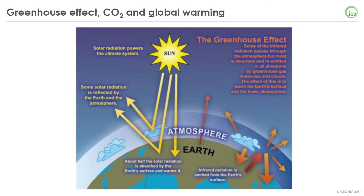A very short summary of the greenhouse effect. The temperature of the Earth results from a balance between energy coming from the Sun and the energy leaving the Earth into space. About half of the solar radiation heating the Earth is absorbed at the surface; the other half is absorbed by the atmosphere or reflected back into space. Part of the energy absorbed at the Earth's surface is radiated back to the atmosphere in the form of heat energy. The temperature we feel is a measure of this heat energy.